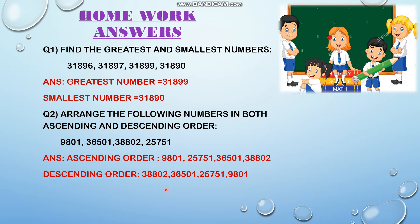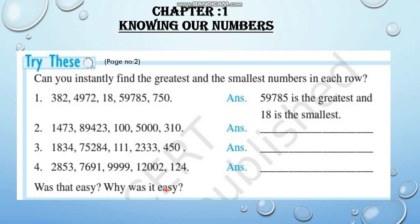Now let's move to some textual exercises. Chapter 1: Knowing Our Numbers. Today we are discussing some textbook questions. This is from page number 2 — 'Try These.' Can you instantly find the greatest and smallest numbers in each row?